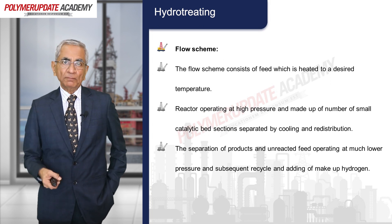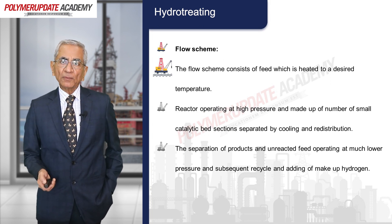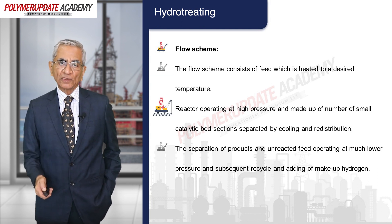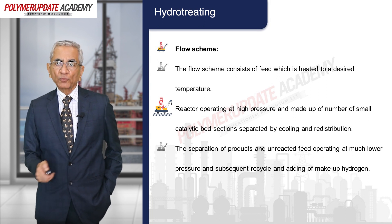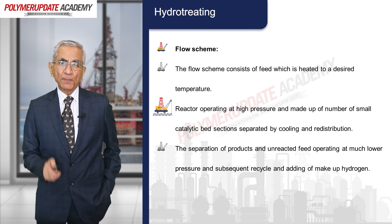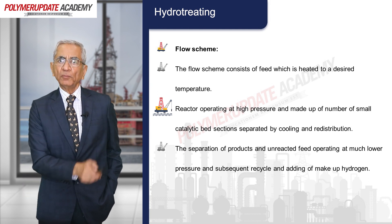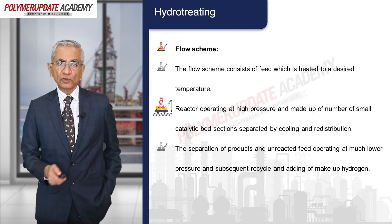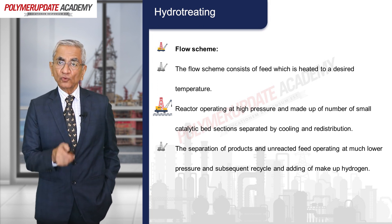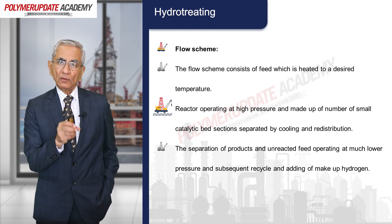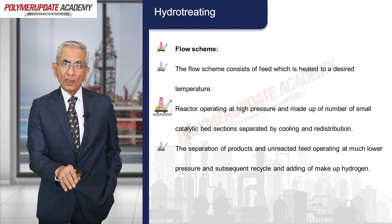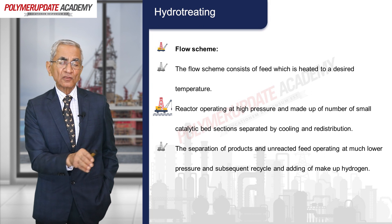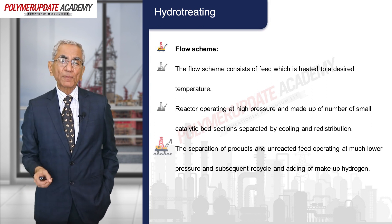What is the flow scheme? The flow scheme consists of feed which is heated to a desired temperature, a reactor operating at high pressure, made up of a number of small catalytic bed sections separated by cooling and redistribution zones. The reaction being exothermic increases the temperature, so the reactor always has a cooling zone and then redistributes the material so that the process is not carried out at very high temperature.